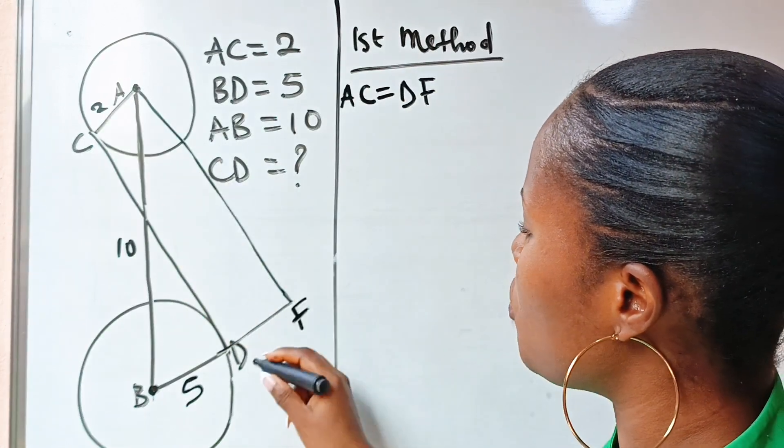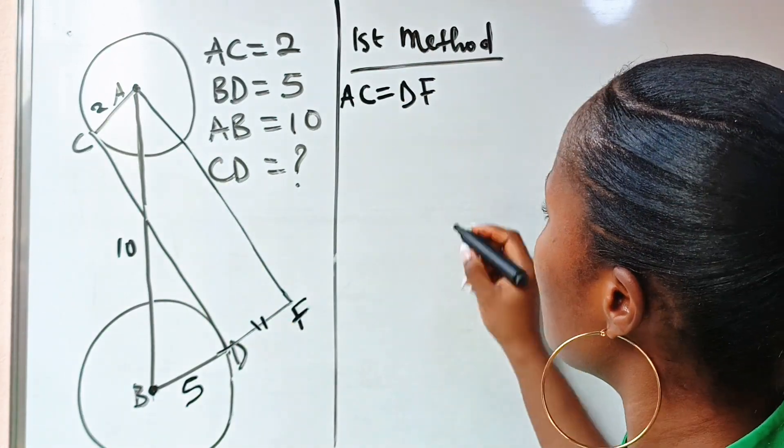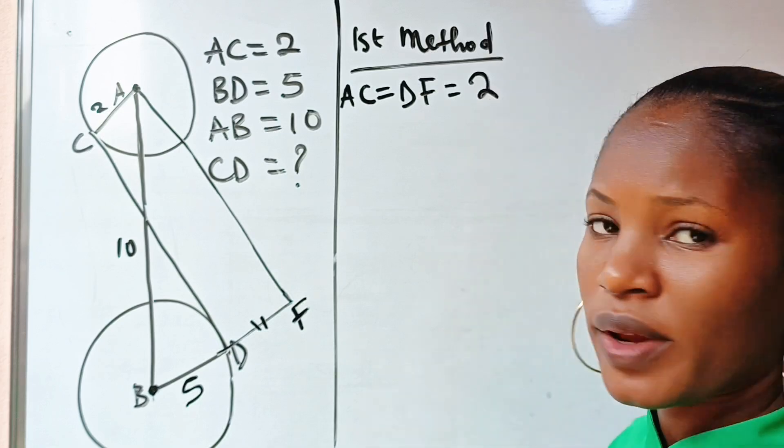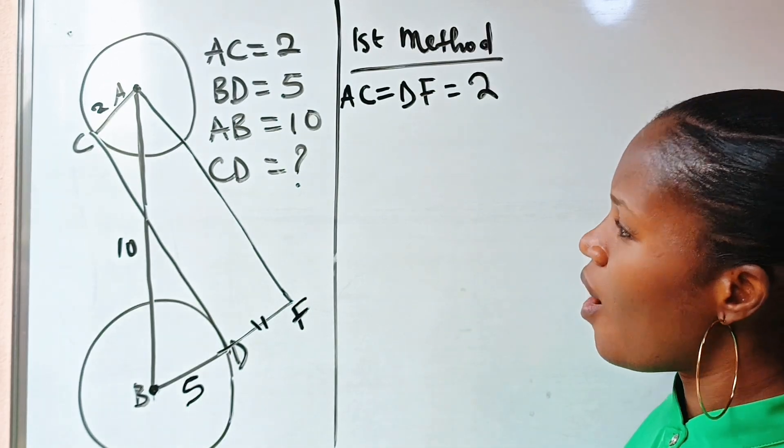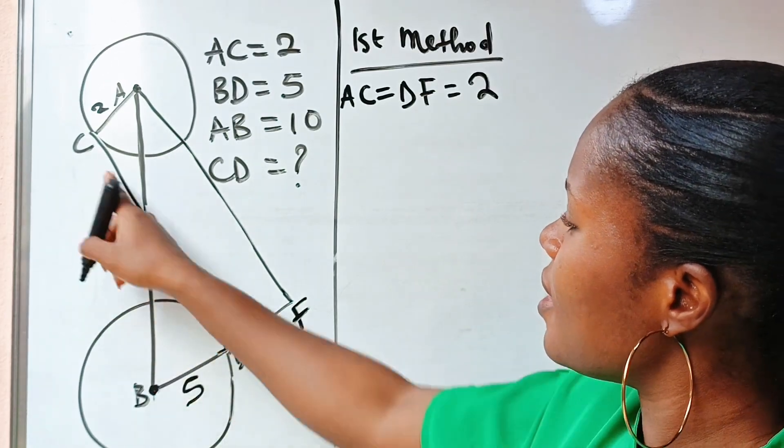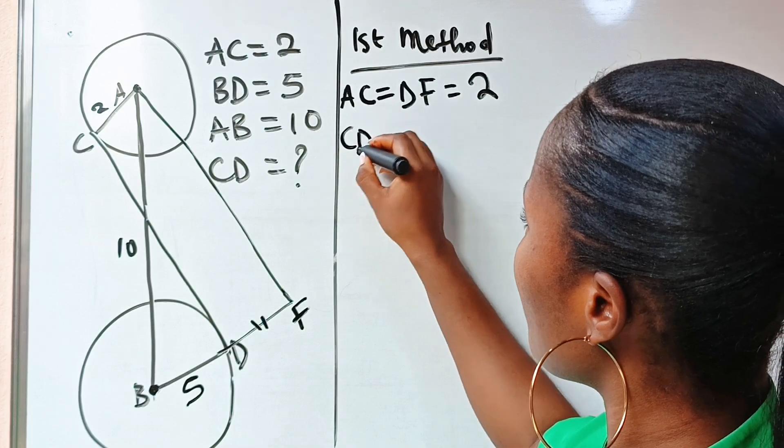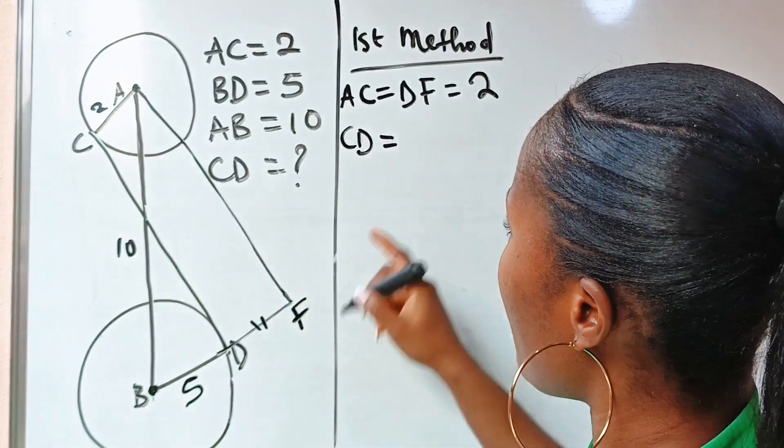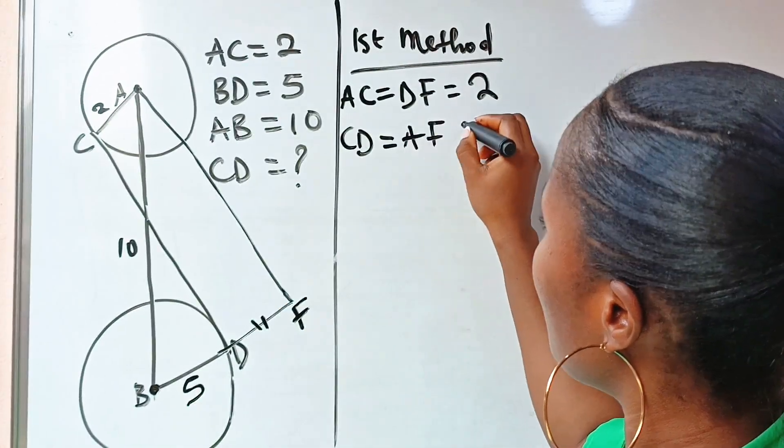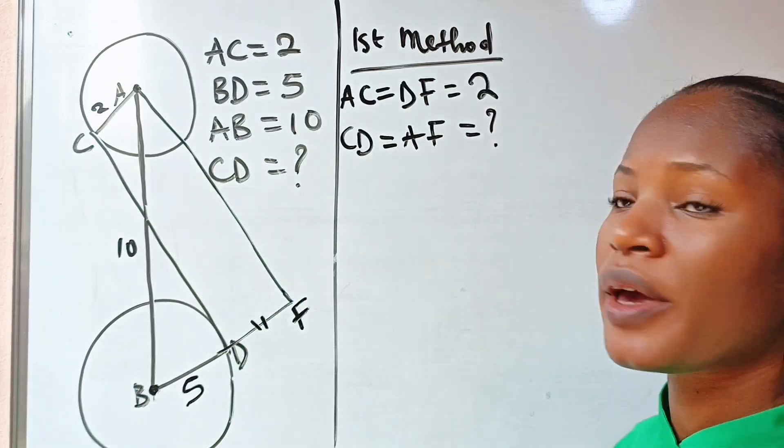So AC is equal to DF. That is, this place should be equal to this place, right, which is equal to two units. Also, CD should be equal to AF, which is what we are looking for.